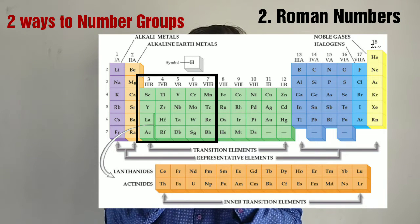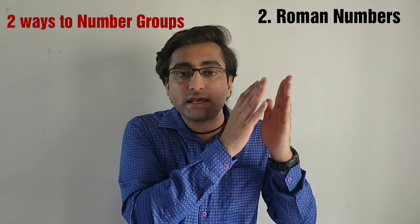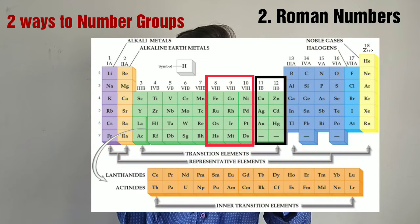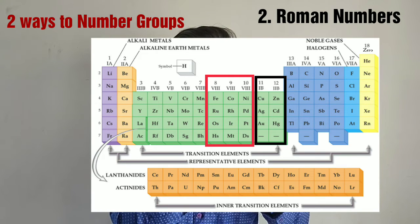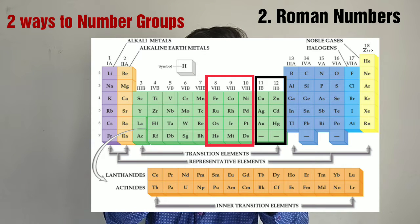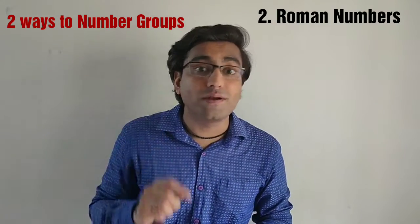After 1A and 2A, the next group is the 3rd group and it is short, hence it is numbered as 3B. Group numbers 4, 5, 6 and 7 are given the numbers 4B, 5B, 6B and 7B respectively. Group number 12 is shorter and hence it is numbered as 2B. Group number 11 is also shorter and hence it is given the number 1B. Groups 8, 9 and 10 are together called group number 8. This is the way in which you can number the groups using Roman numbers.